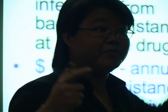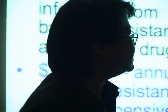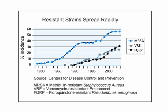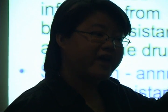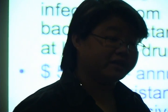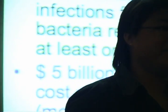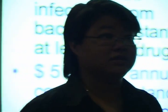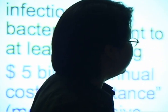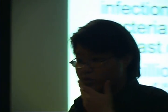Here are some common resistant bugs we see in hospitals. MRSA — methicillin-resistant Staph aureus — back in the 80s was extremely rare, just a few percent incidence in hospitals. Now we're almost at 60 percent and it continues to climb. VRE — vancomycin-resistant Enterococcus — vancomycin was one of our big guns saved as a last resort, and now we see almost 30 percent resistance. Same with fluoroquinolone-resistant Pseudomonas aeruginosa, another pathogen with high mortality.